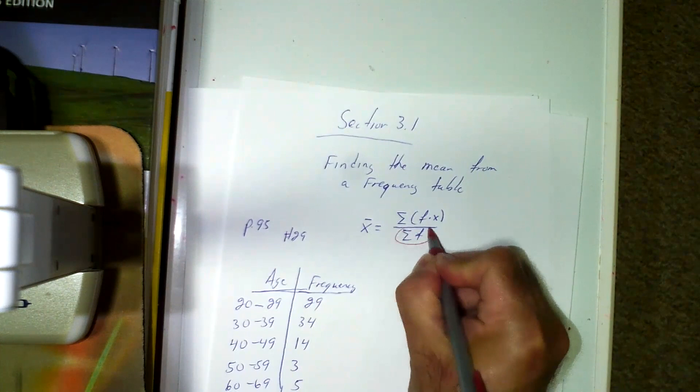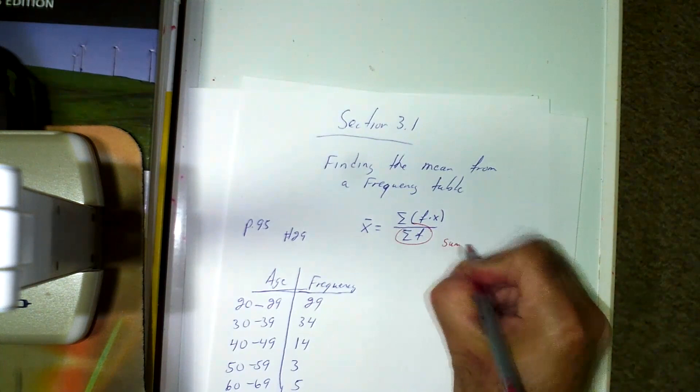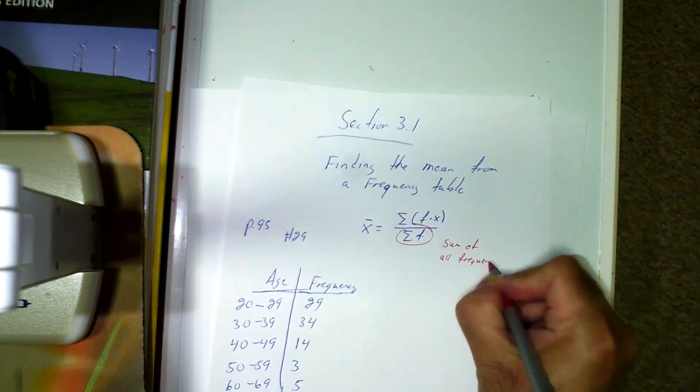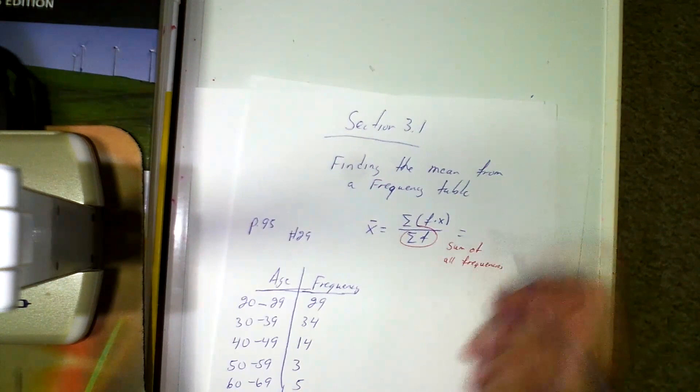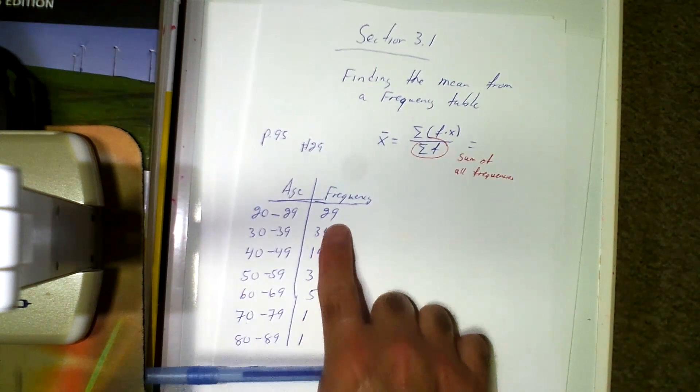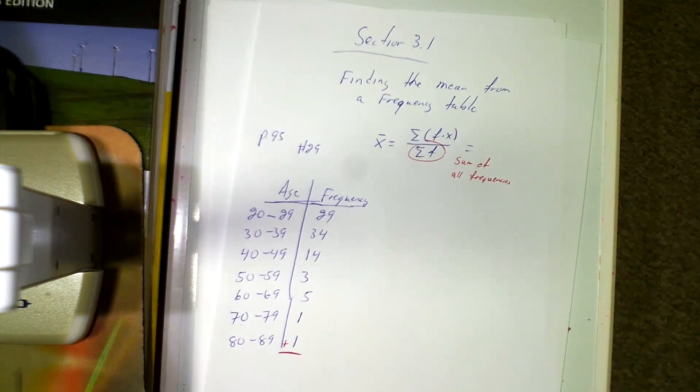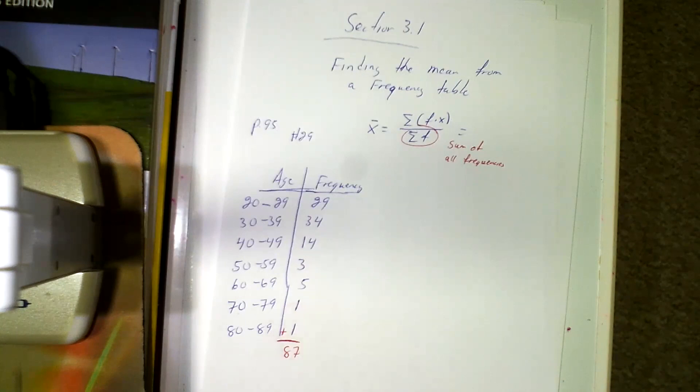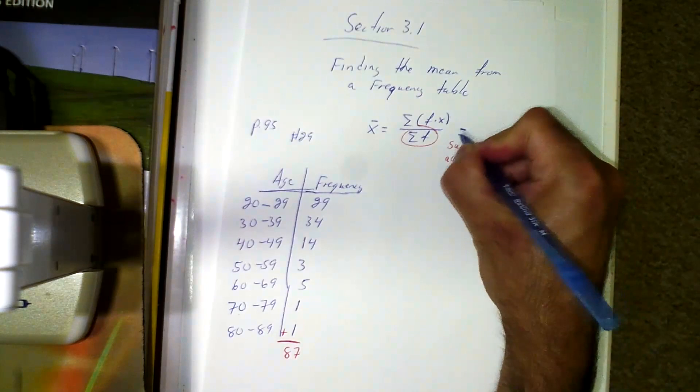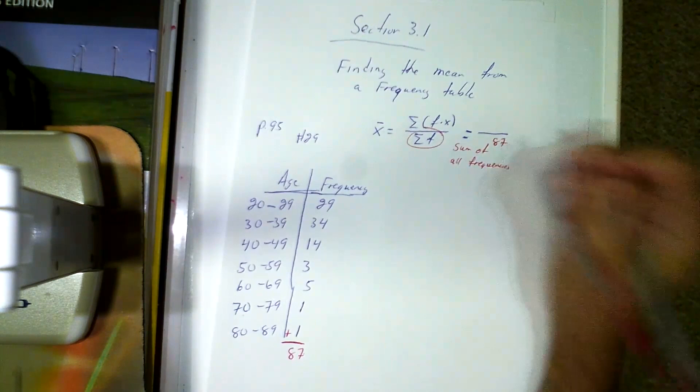So I know this summation means the sum. So it says find the sum of F. So we're doing the bottom. The bottom is saying it's the sum of all frequencies. So let's do that. That's easy. All I have to do is add up all these numbers. The sum of all these numbers will give me the bottom part of my formula. So if I add it up, I believe that that is going to be 87. I'm going to double check: 29, 34, 14, 18, 3, 5, 2... 87. So I know that the sum of my frequencies is 87. So that's the bottom piece of the formula, 87.